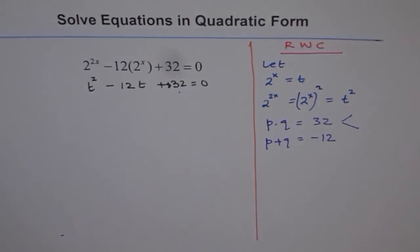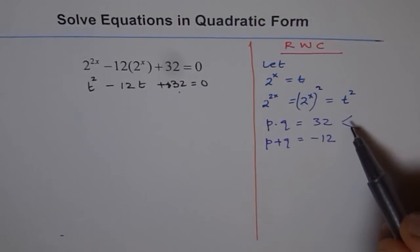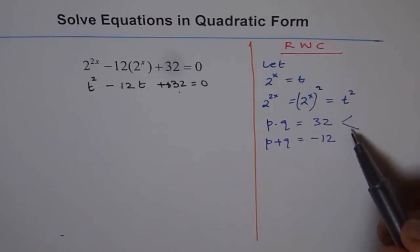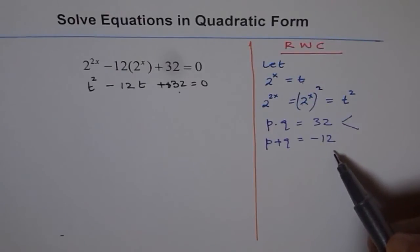Now, what could be these two numbers? 32, you can get 16 times 2 as 32. Well, in that case, you don't get 12. And both numbers should be negative because when you multiply negative numbers, you get positive, but when you add, you get negative. That's what we are looking for. But 8 times 4 can work.